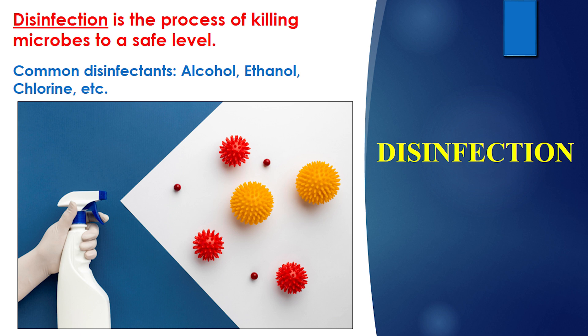For disinfection, there is a different science behind it. Disinfection is the process of killing microorganisms to a safe level. It does not kill all microorganisms, but it kills them to a certain extent. For disinfection, we can use compounds or chemicals like chlorine, phenols, alcohol, or ethanol — these are the agents which can kill microorganisms.